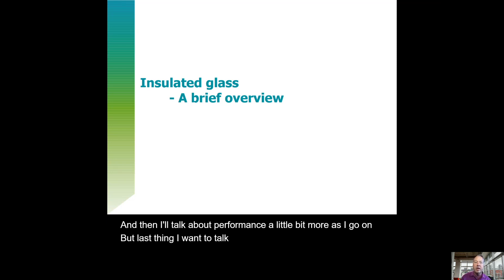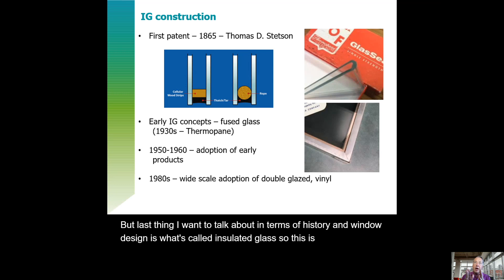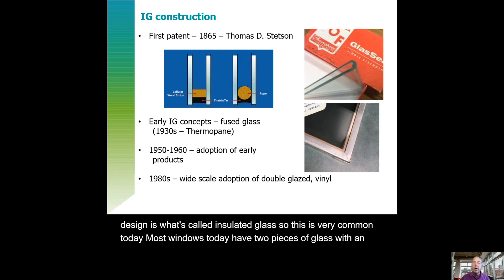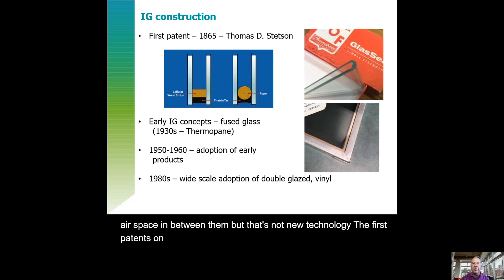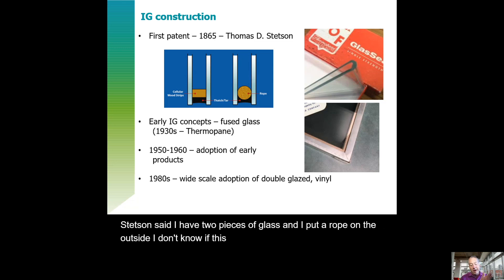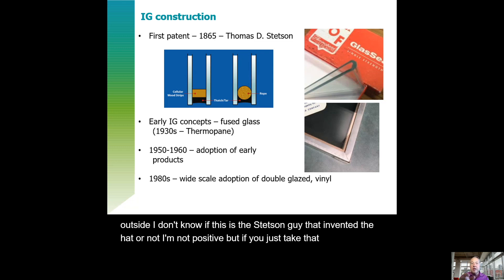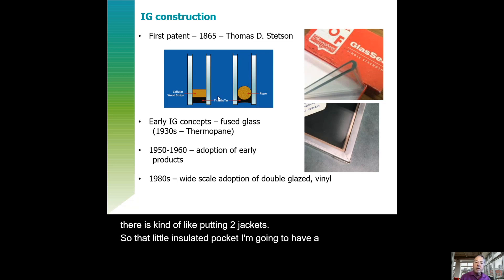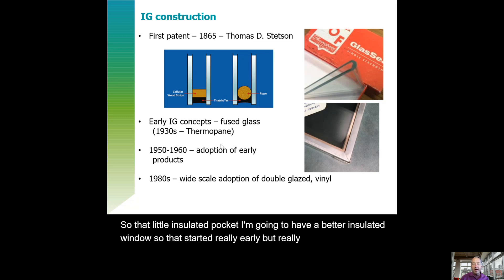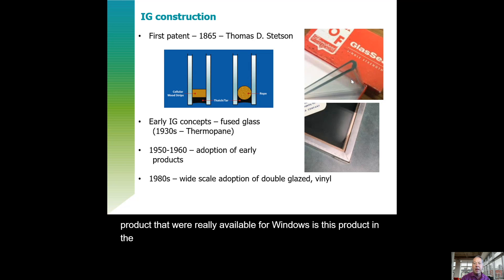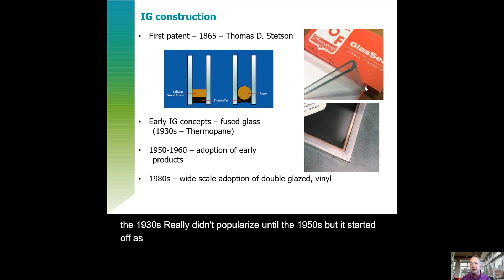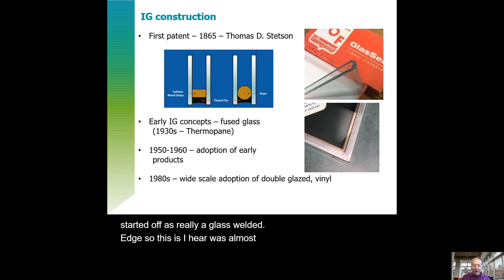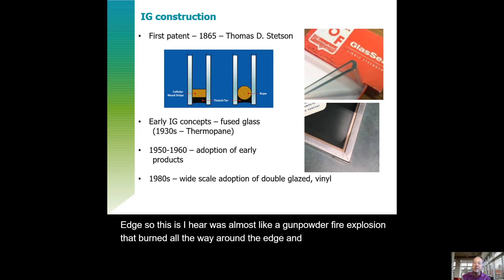The last thing I want to talk about in terms of history and window design is insulated glass — very common today with two pieces of glass with an air space in between. But that's not new technology — the first patents date back to 1865. Thomas Stetson said if you have two pieces of glass with rope on the outside tarred in place, that little air pocket is like putting on two jackets — a better insulated window. Really the first commercial products available were this product called Thermopane, starting as early as the 1930s but really popularizing in the 1950s. It started as a glass-welded edge — almost like a gunpowder fire explosion that burned all the way around the edge, welding the glass edges together with dry air in between.